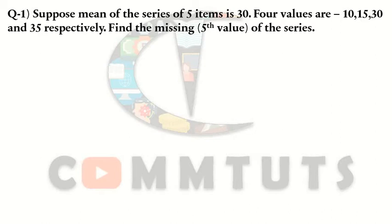Question number one: suppose the mean of a series of five items is 30. So the number of items in the series is five, and the mean — x̄ — is 30.